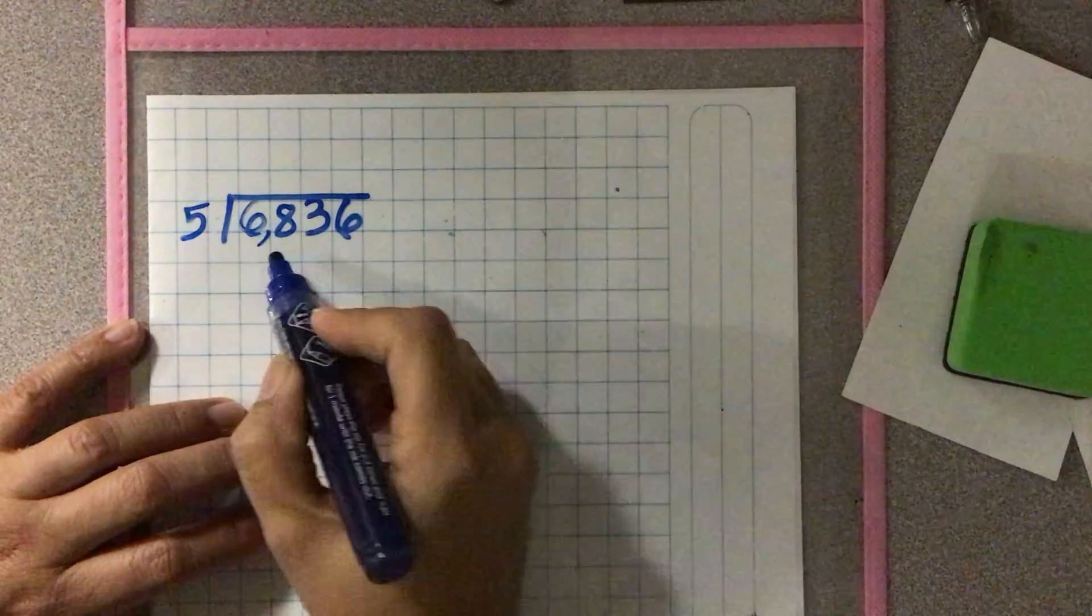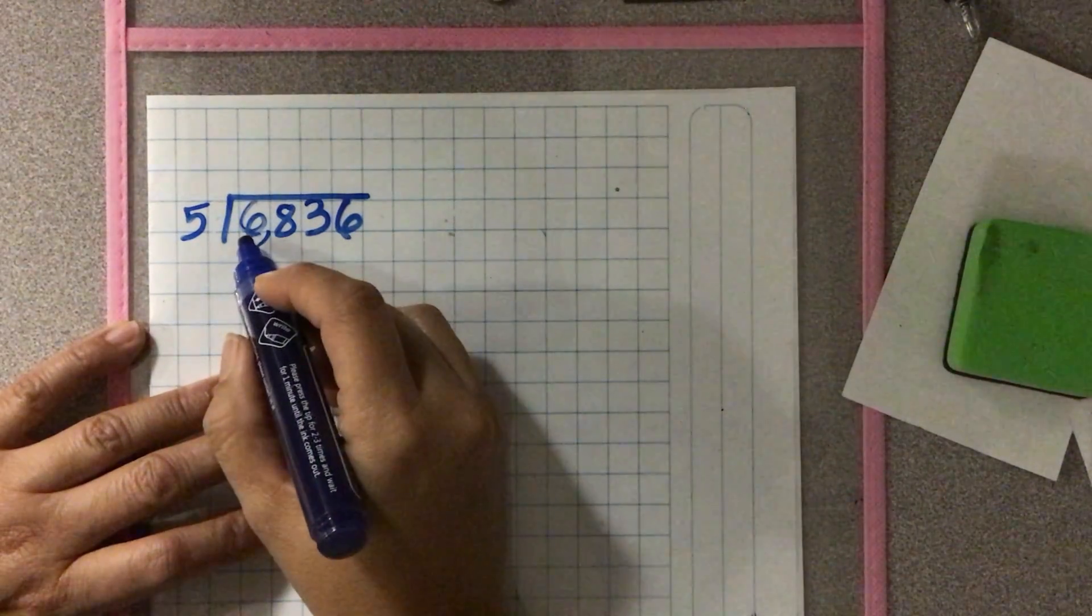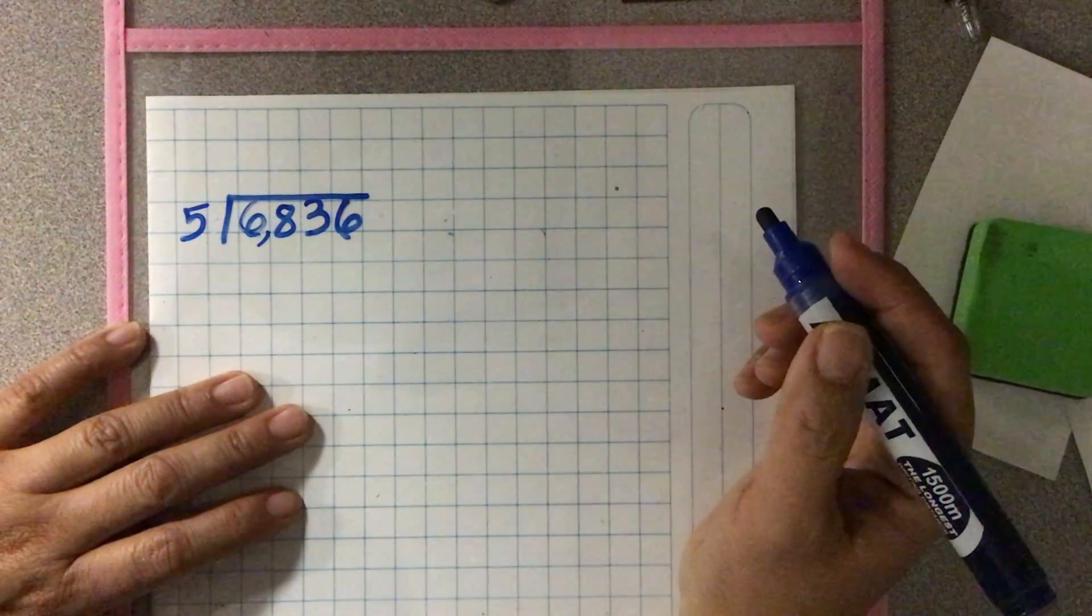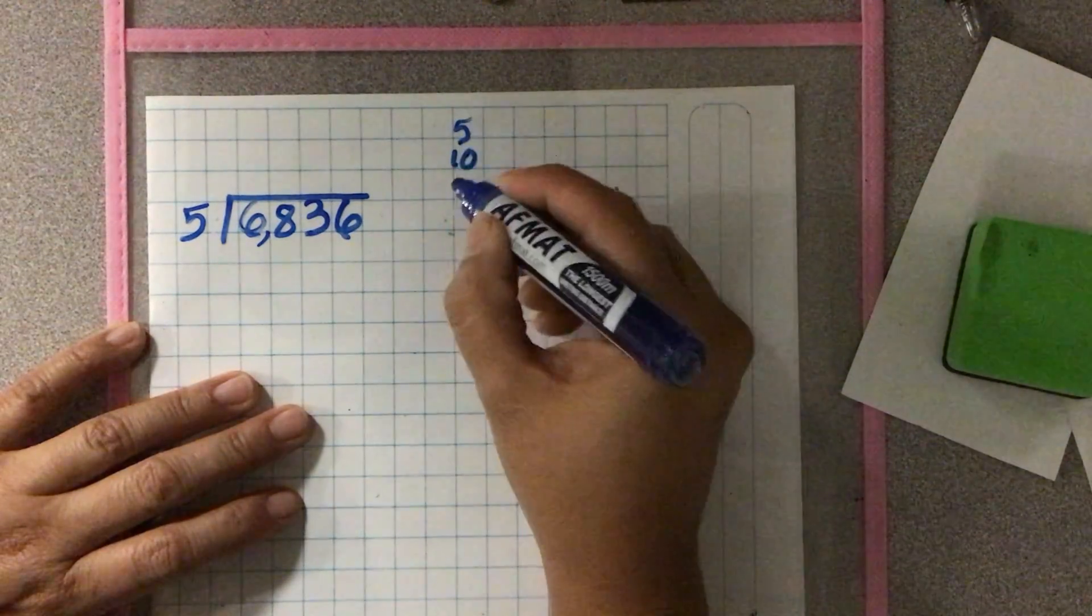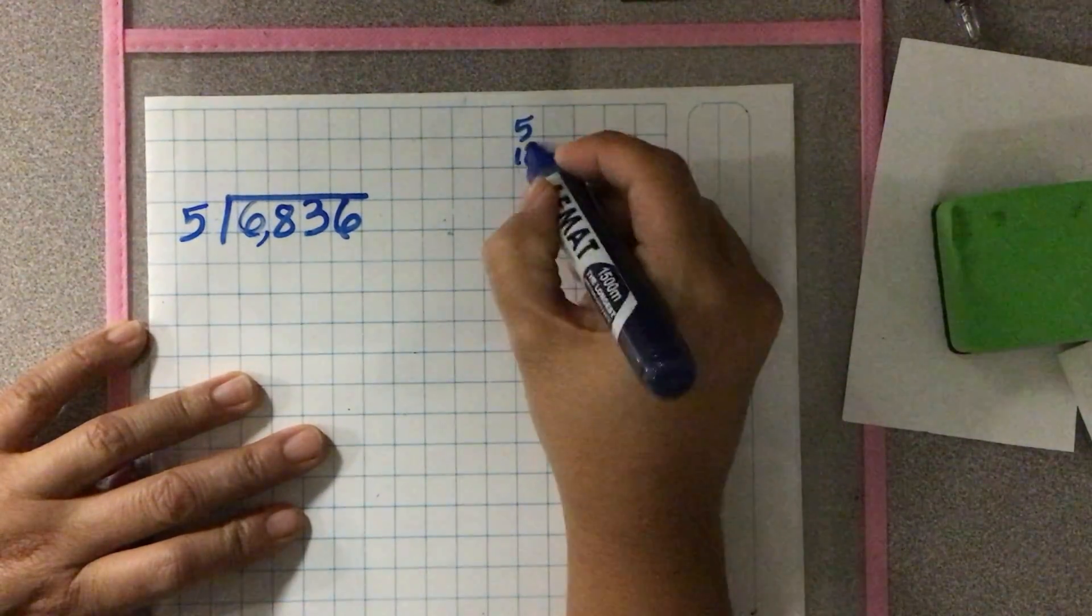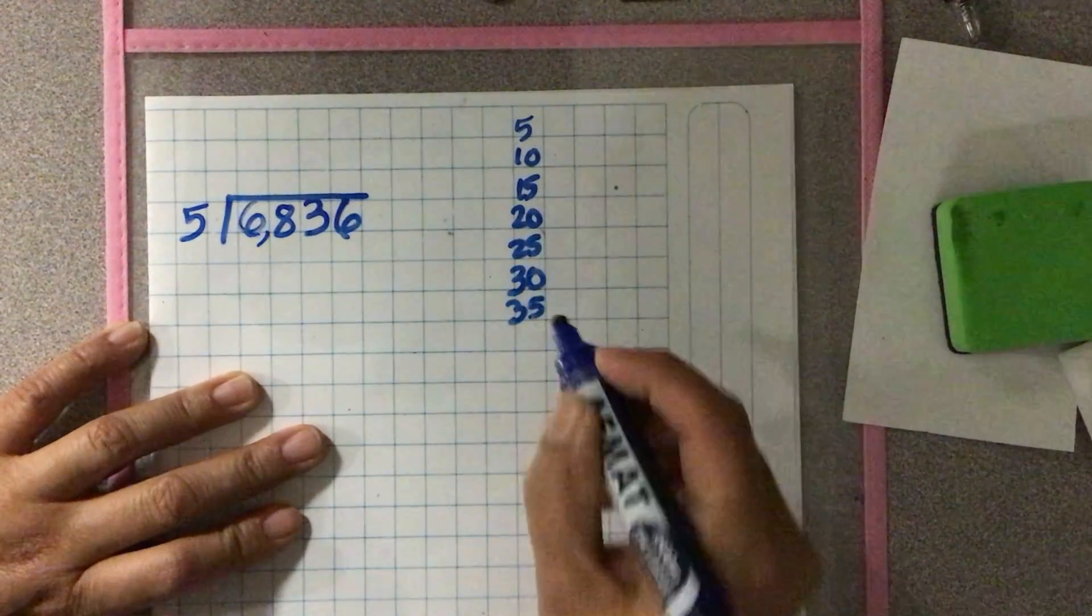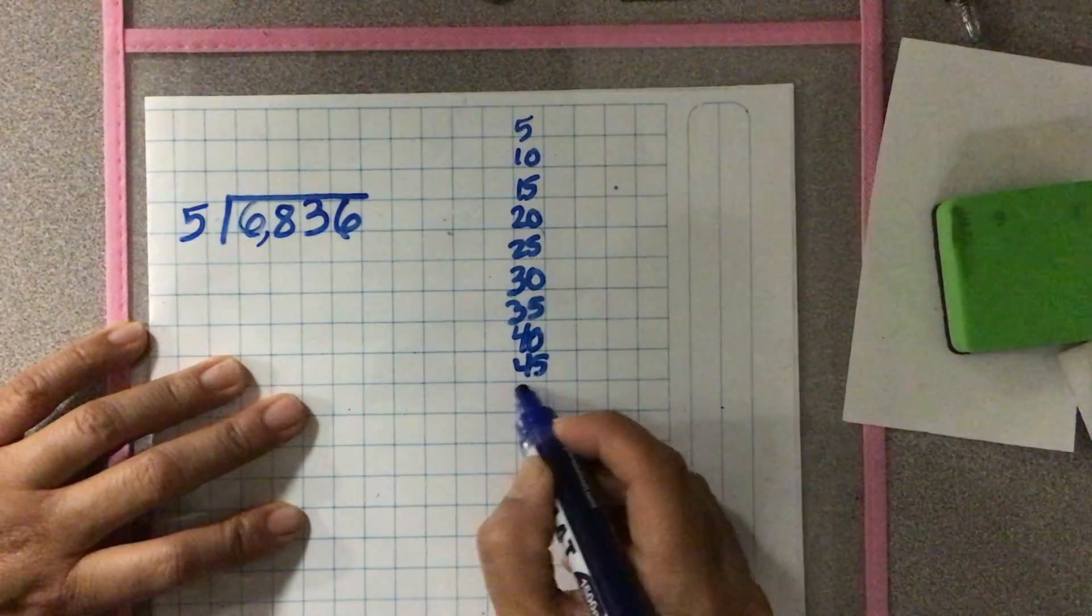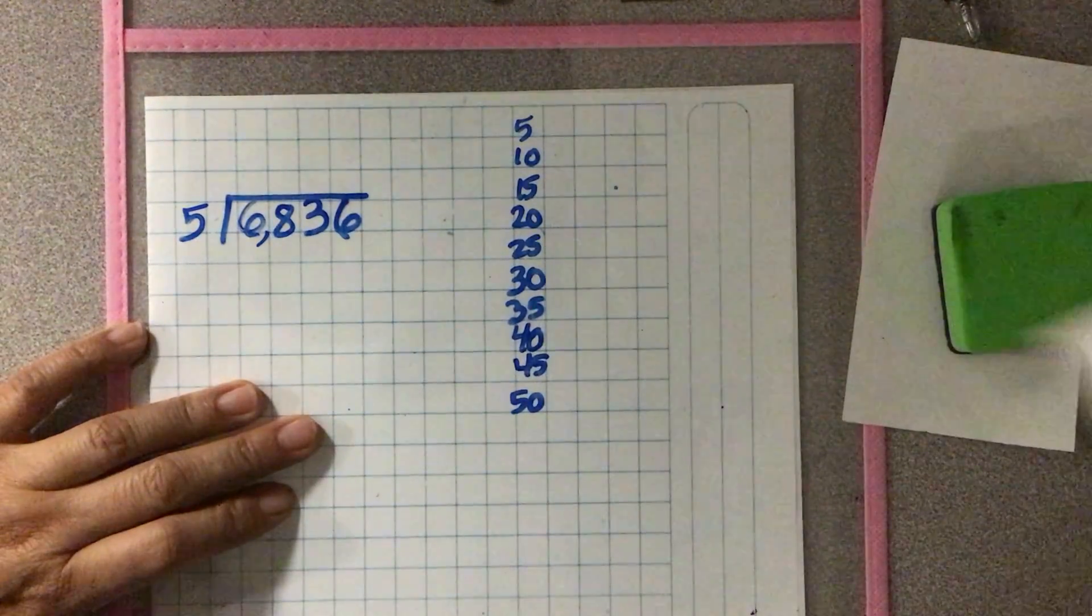Let's divide 6,836 by 5. The 5 times tables are really easy, so it's 5, 10, 15, 20, 25, 30, 35, 40, 45, 50. Let's stop right here.